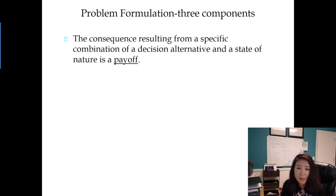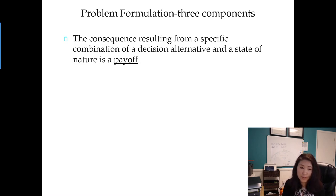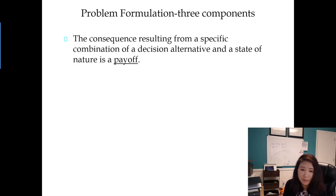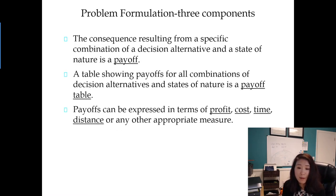The payoff is the third component to identify when formalizing a problem. It is the consequence resulting from a specified combination of a decision alternative and a state of nature. For example, if you choose to go to college and they accept you, what is the outcome? If they don't accept you, what is the outcome? A table showing payoffs for all combinations of decision alternatives and states of nature is called a payoff table. Payoffs can be measured not just in money but also by time, distance, or any other property measure.